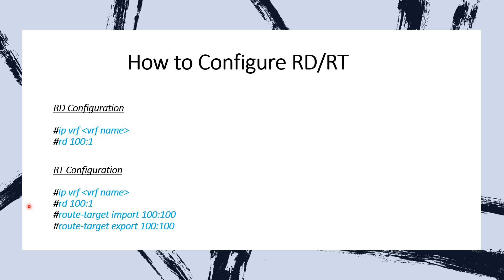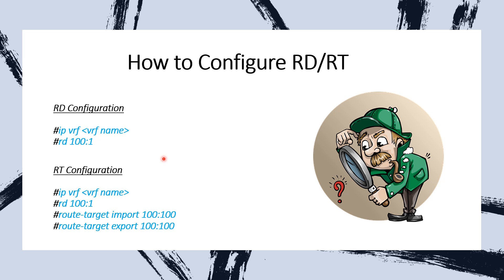This configuration has been taken from a Cisco device, so this is from Cisco's perspective on how to configure an RD and RT. Different vendors have different command-line syntax — for Juniper you go under the routing instance, for Cisco it's the VRF. As long as you know the concept of where to configure an RD and RT on a router, you're good to go in an interview regardless of vendor differences. From Cisco's perspective, we go under the VRF definition.